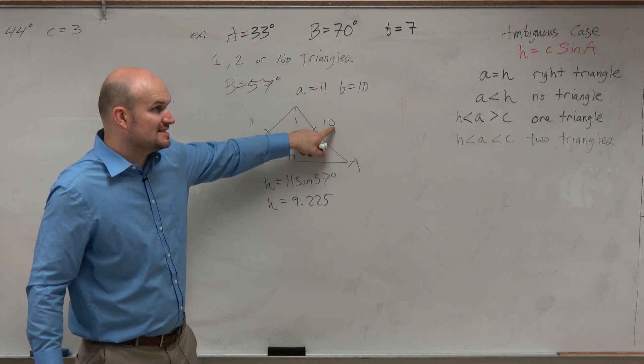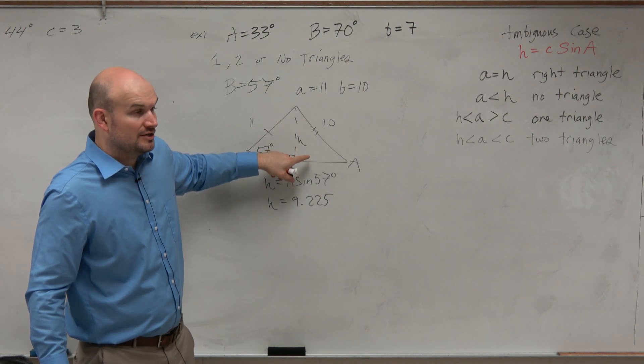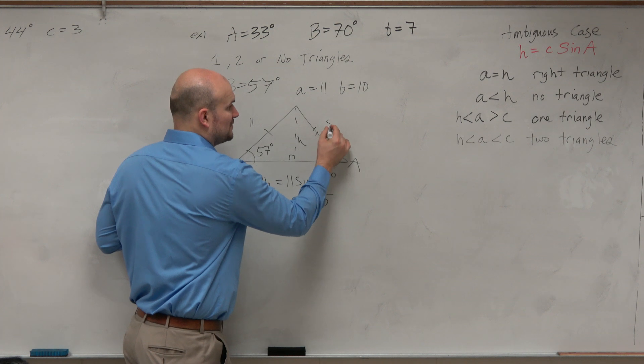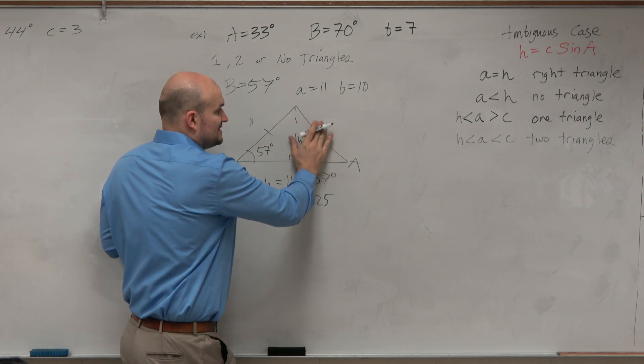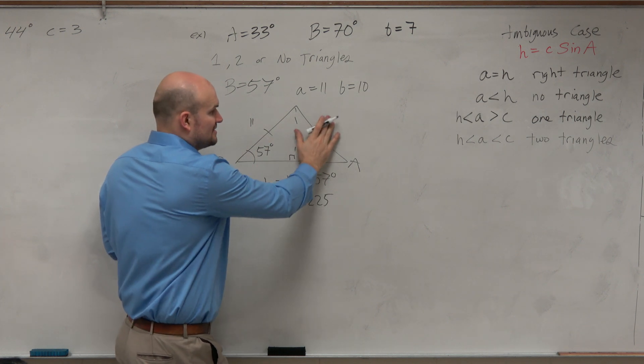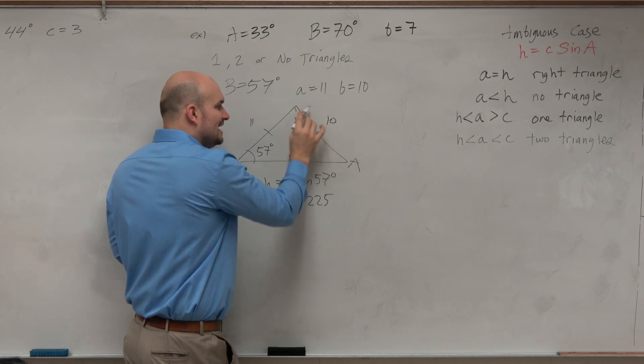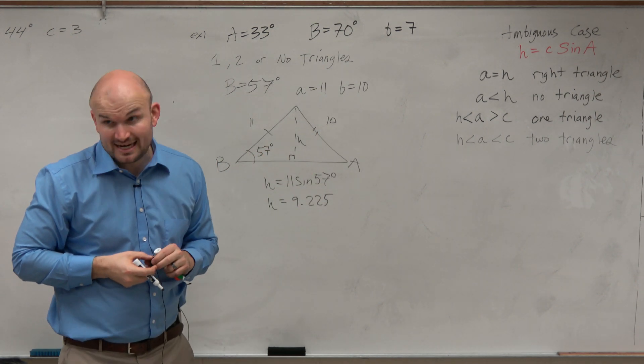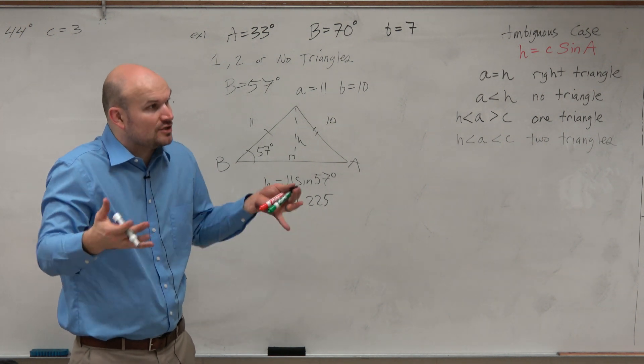OK, is this opposite side of A shorter than 9.225? No, so that means there's a triangle exists, right? If this was 5, we would say no triangle exists. If this is 2, we'd say no triangle exists. If this is 9, we'd say no triangle exists. But since this is 10, it's larger than the height. So a triangle exists. Got it? Does that make sense? I don't think you need to memorize it. I think you need to just try some problems, and you'll be OK.